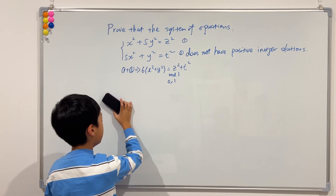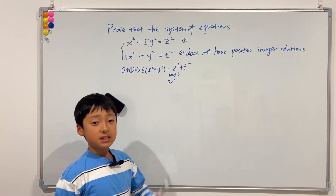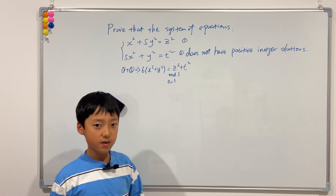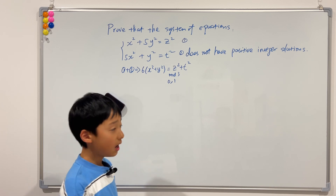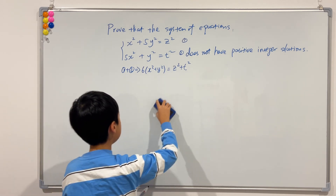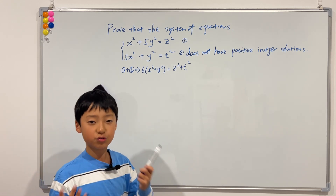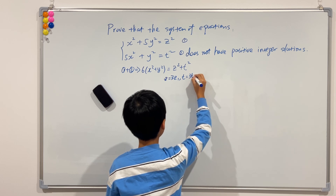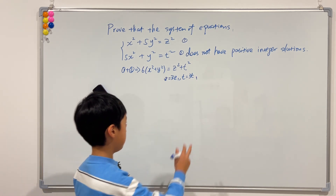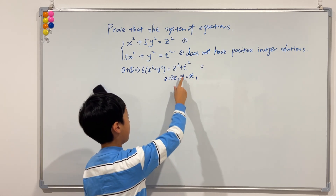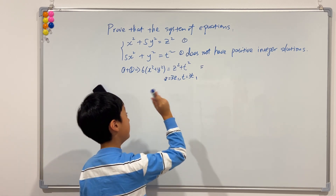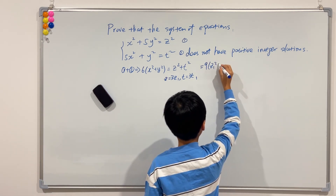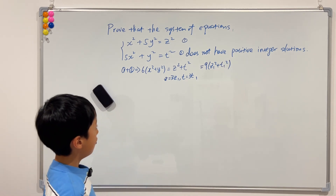So z² and t² each must be divisible by three. Since z² is divisible by three, z itself has to be divisible by three — I'll leave this identity for you to prove. Using this information, we let z = 3z₁ and t = 3t₁. The right-hand side then becomes 9z₁² + 9t₁² = 9(z₁² + t₁²). Dividing both sides by three gives the left-hand side as 2 and the right-hand side as 3(z₁² + t₁²).